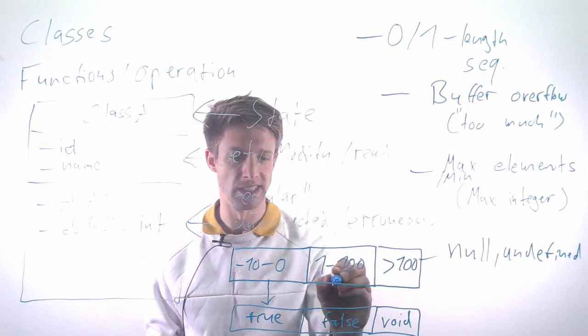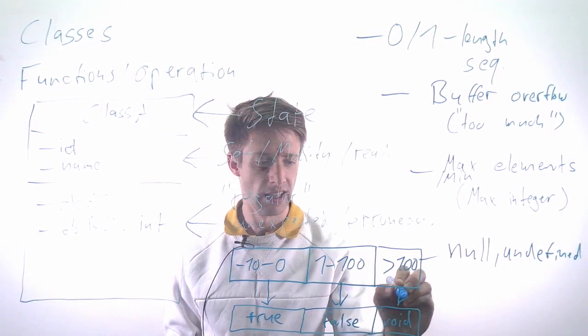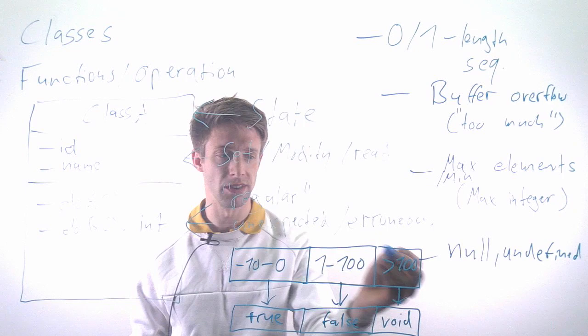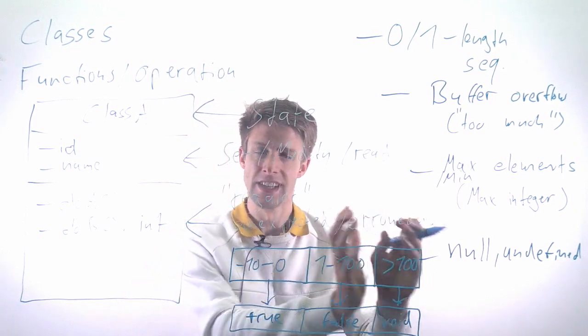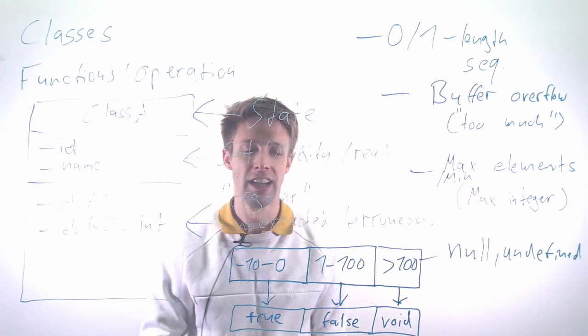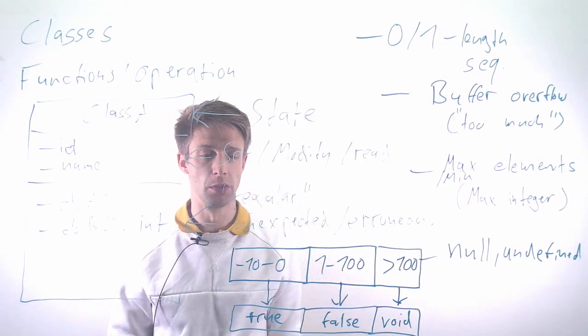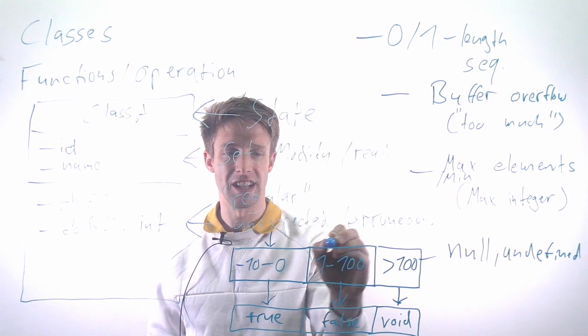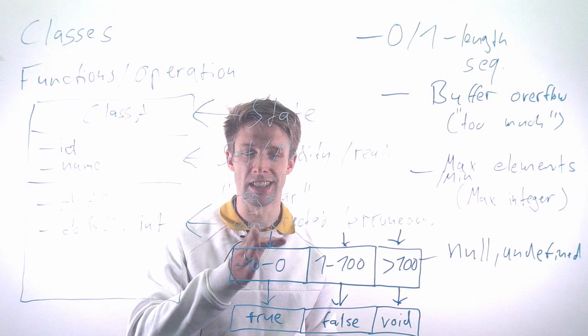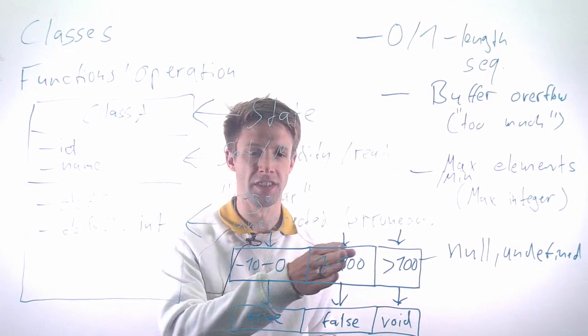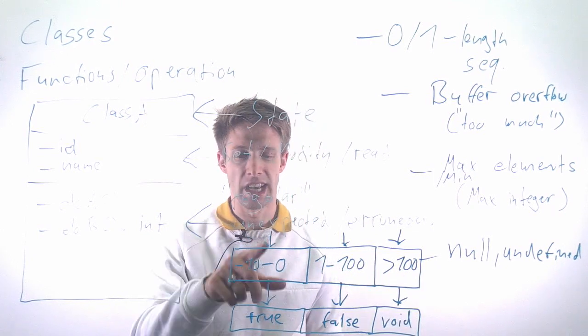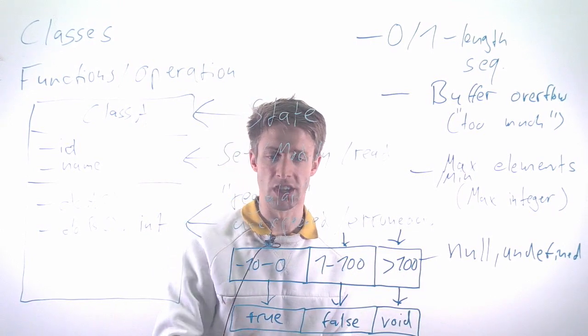Instead of having to test all possible integer values, you've partitioned your input space into different groups, boxes, or classes. Then the strategy is to choose a typical value from each of these classes. We write a test with input -5, 10, 200—typical elements—and check whether we get the expected results.